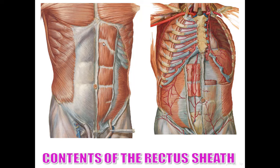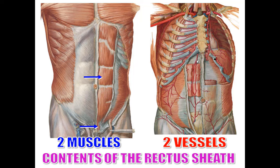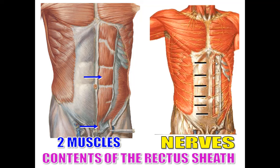Regarding the contents of the rectus sheath — here the rectus sheath is shown open. It contains two muscles: rectus abdominis muscle and pyramidalis muscle. Two vessels: superior epigastric vessels and inferior epigastric vessels. The nerves are the lower six thoracic nerves, or lower five intercostal nerves and the subcostal nerve. The vessels and nerves are located behind the rectus muscle.